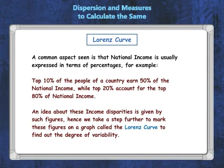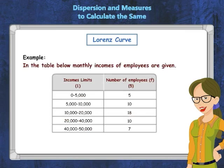Hence, we take a step further to mark these figures on a graph called the Lorenz Curve to find out the degree of variability. We will now construct the Lorenz Curve on graph paper based on percentages with the help of an example.